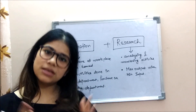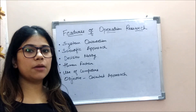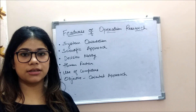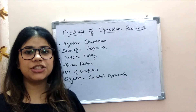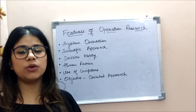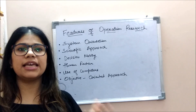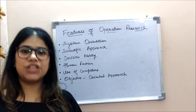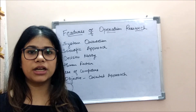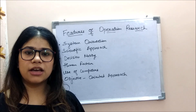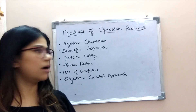The first feature of Operation Research is system orientation. OR is a system orientation process because it deals with the organization as a whole. If there are changes in one department, it will affect other departments. For example, if we change the product in the marketing department, the sales department will also be affected.